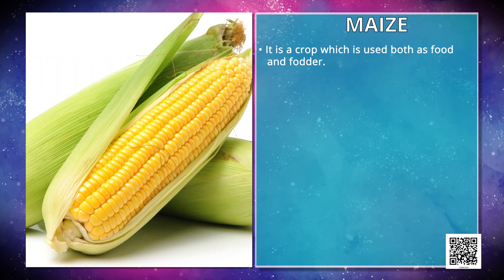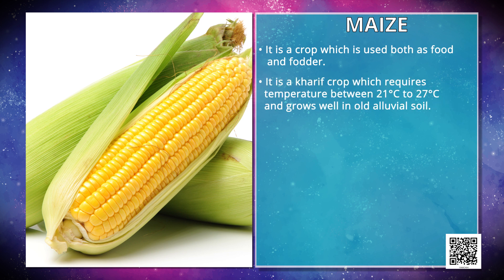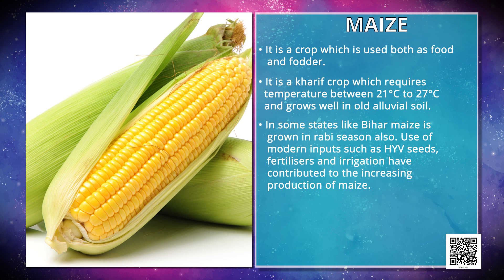Maize is a crop which is used both as food and fodder. It is a Kharif crop which requires temperature between 21 degrees Celsius to 27 degrees Celsius and grows well in old alluvial soil. In some states like Bihar, maize is grown in the Rabi season also. Use of modern inputs such as HYV seeds, fertilizers and irrigation have contributed to the increasing production of maize.